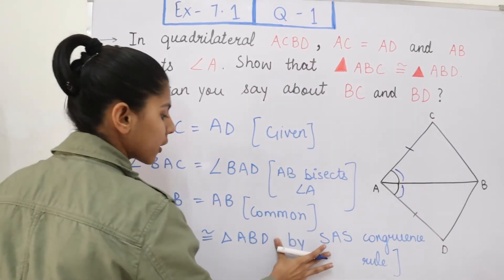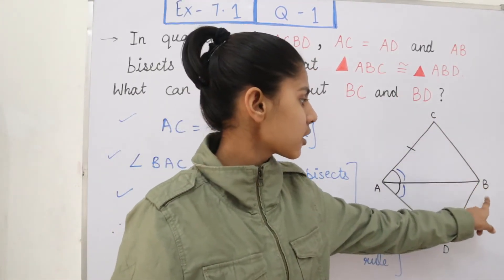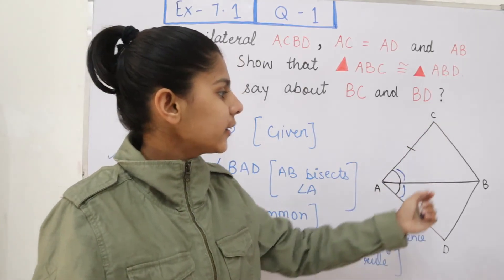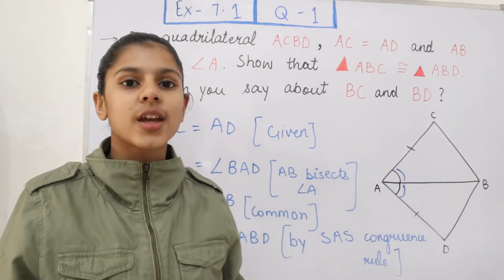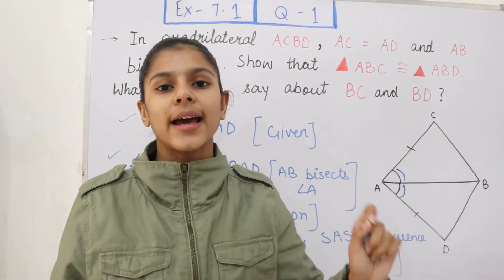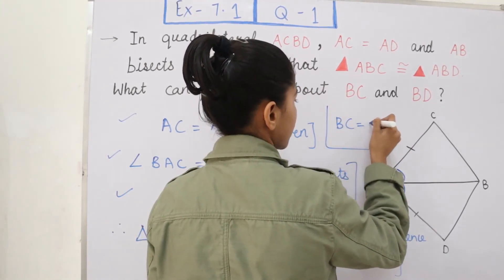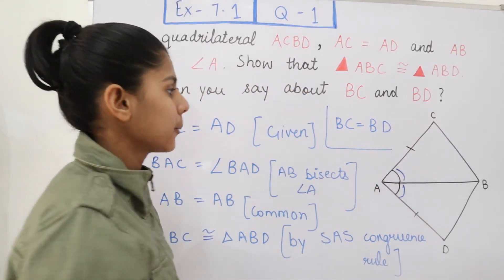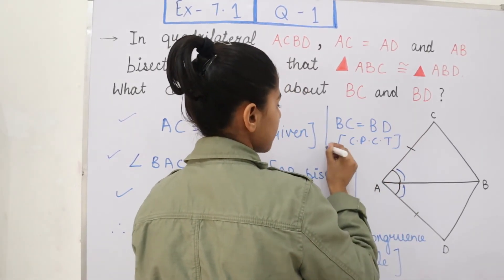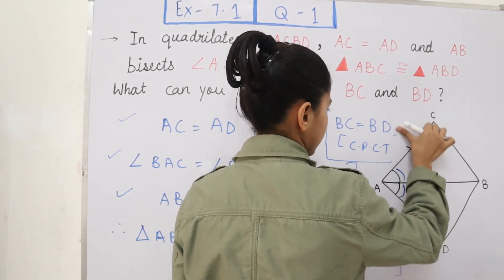Now we have proved them congruent. The question asks what can we say about BC and BD. We can say that BC and BD will be equal because they are the corresponding parts of the congruent triangles. So we write BC = BD, and the reason is CPCT — Corresponding Parts of Congruent Triangles. By CPCT, these both line segments are equal.